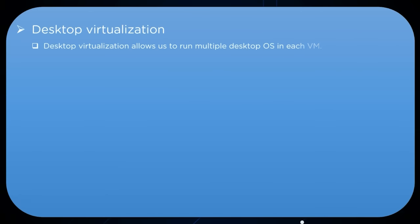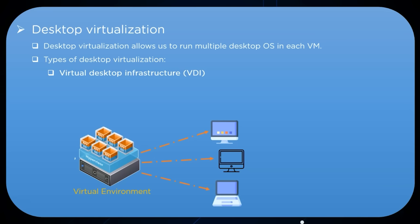For desktop virtualization, we can run multiple operating systems on a single hardware system. The first subtype is Virtual Desktop Infrastructure (VDI), which runs numerous virtual machines on a central server and hosts them to users according to their requirements, so users can access any OS without physically installing it. The second is local desktop virtualization, which uses a hypervisor on the local system to run multiple operating systems simultaneously without affecting the host OS.